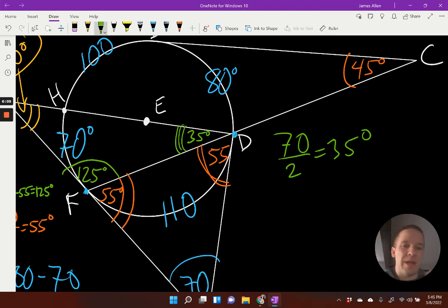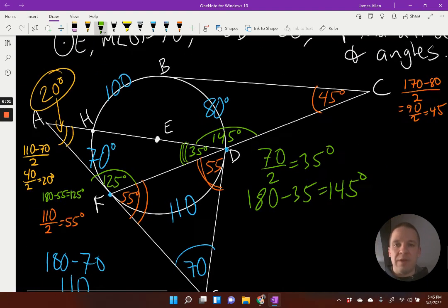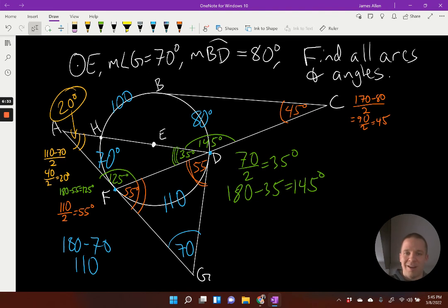And then last but not least, can we figure out one more angle? How about this? What do we know about that one right there? That's going to be supplementary to the 35. It's a straight line, a secant line going through. So 180 minus 35, that's going to be 145, 145 degrees. I believe we have covered every single arc and angle in this wild radical.